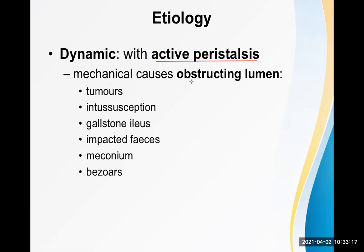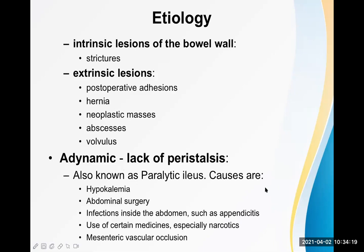Causes that obstruct the lumen include tumor, intussusception (where the proximal loop of bowel telescopes into the distal one), gallstone ileus, impacted feces (hard fecal matter), meconium in small babies, and bezoars. Bezoars are masses formed when someone ingests indigestible substances such as hair — especially seen in psychiatric patients — which collect in the stomach or distally and cause obstruction.